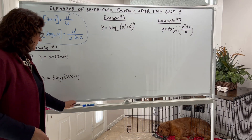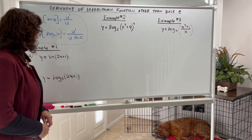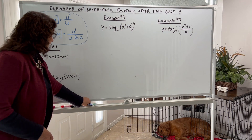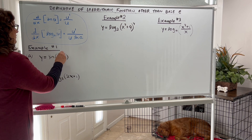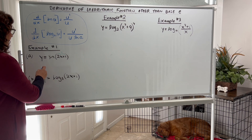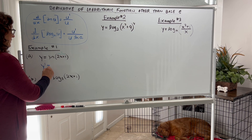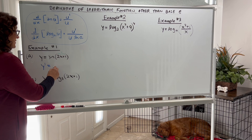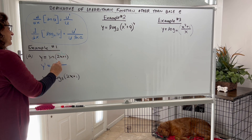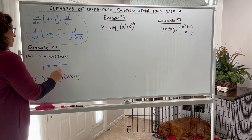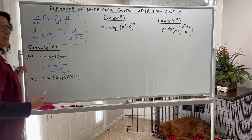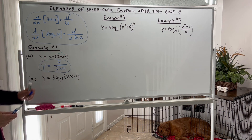Let's take a look at the examples so we can see how these formulas work. Example number one — this is a natural log. So natural log, and 2x plus 1 is my u quantity. To find y prime, in the numerator of this fraction you put the derivative of the quantity — the derivative of 2x plus 1 is 2 — and then put it over 2x plus 1. Simplify if you can, but this is in simplified form. There's your derivative.